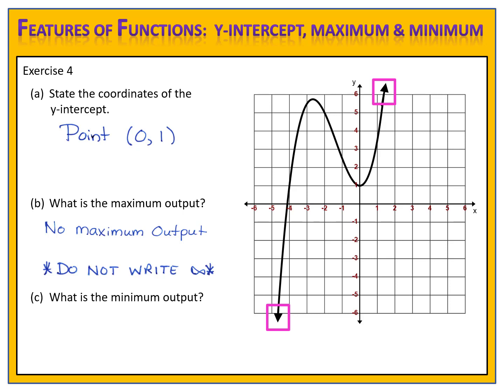How about the minimum of the function? How low does the function go? Well, the function goes downward forever — toward negative infinity — which means we have no minimum output. Again, be careful: do not write negative infinity. Negative infinity simply means that the graph continues in the downward direction, but it is not an output.